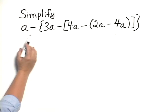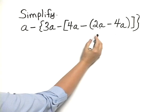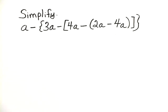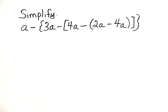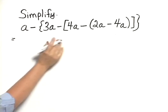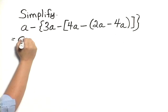Simplify A minus the quantity 3A minus the quantity 4A minus the quantity 2A minus 4A, and all of those grouping symbols are closed there. To do this, we need to work from the inside out and work carefully, making sure every time we change something in here, we copy the rest of the expression.